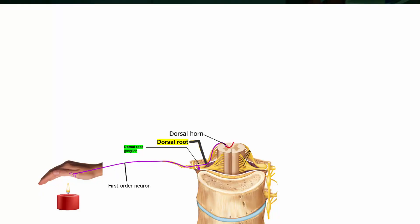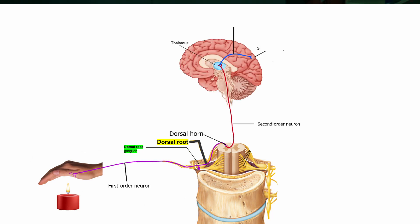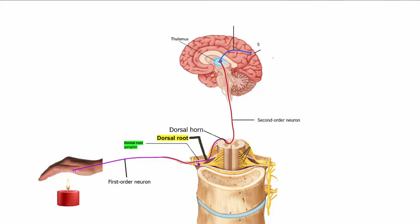Dorsal means toward the back of your body. Now the first-order neuron connects to the second-order neuron by a synapse. The second-order neuron travels up to your brain through a tract — basically a bundle of axons. In the brain, it reaches the thalamus, where it connects to the third-order neuron by another synapse. From there, the third-order neuron goes to the cortex, to the somatosensory area. And that's it — your consciousness is now aware of the temperature.